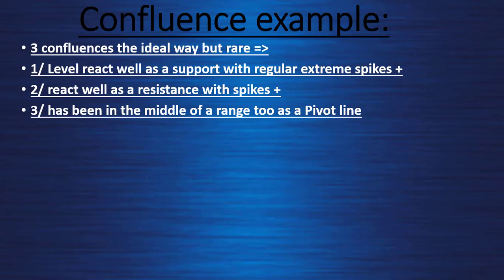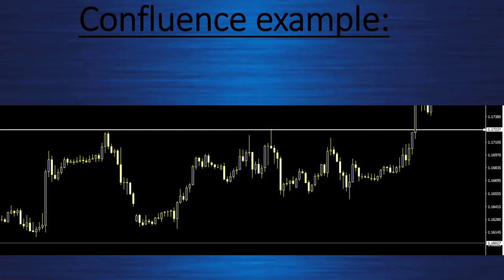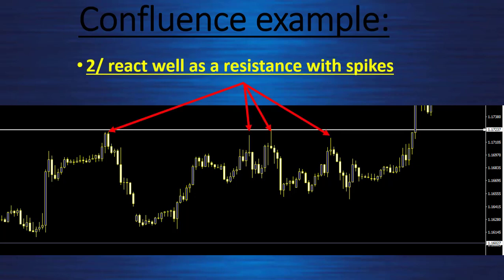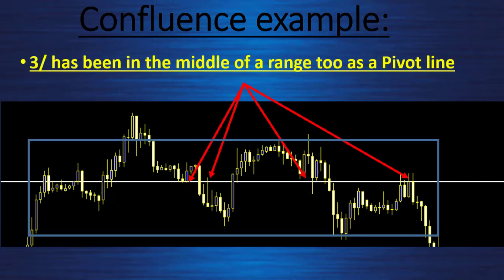Looking at the euro/USD example: three very nice rejections at the level — it acts very well as support. Then at a different time, very nice rejection as resistance with a spike and V shape formation. Finally, in another time period it was in the middle of a range and acted as a pivot point, rejecting as both support and resistance. This is taken on the same time frame — you need to stay on the same chart to find all three confluences. If you use a daily chart, find rejection as support, rejection as resistance, and the pivot line all on the daily chart. You do not switch time frames.